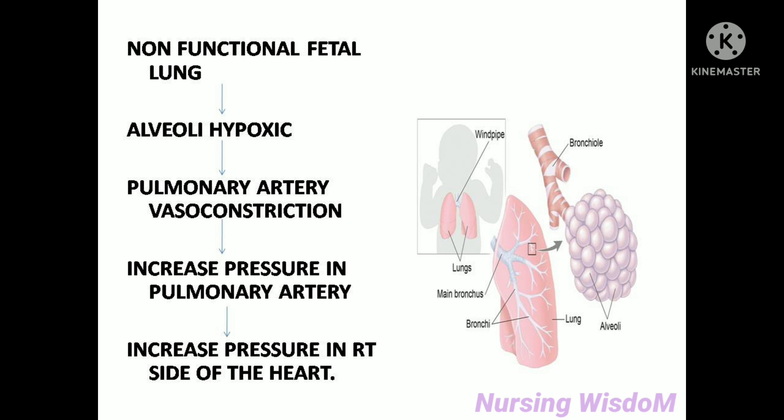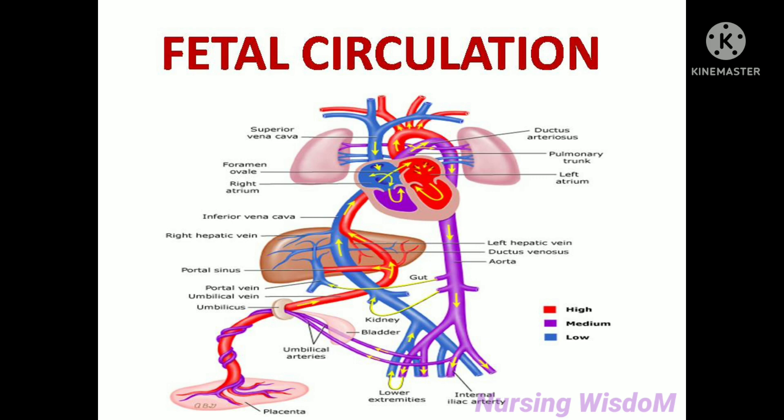Before going to fetal circulation, we should know about the fetal lung. The fetal lung is now in a non-functional state, so there is no air circulation inside the alveoli. Blood vessels supplying the lungs will be constricted to reduce blood flow. Due to this vasoconstriction, the pressure inside the pulmonary artery will be high, which increases pressure in the right side of the heart. So remember: the pressure in the right side of the heart will be higher than the left side.